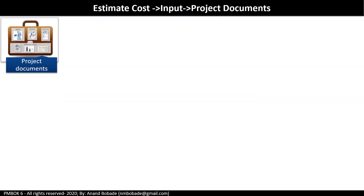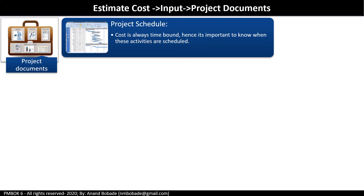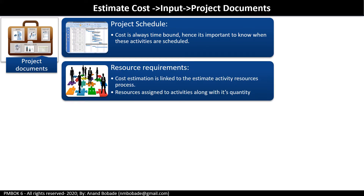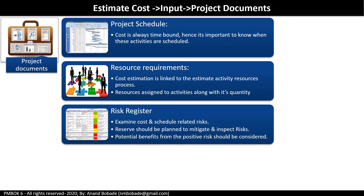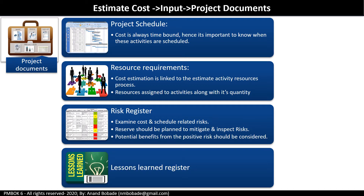The project schedule provides duration estimates for each work package or activity, combined with resource information, to create the cost estimate. Cost is always time-bound, so it is important to know when activities are scheduled. Resource requirements identify the type and quantities of resources required for each work package or activity. The risk register contains information used to estimate cost, especially when obtaining three-point estimates including optimistic, pessimistic, and most likely values. The lessons learned register contains information about past cost estimation exercises and lessons learned, helping to improve accuracy and precision of cost estimates.